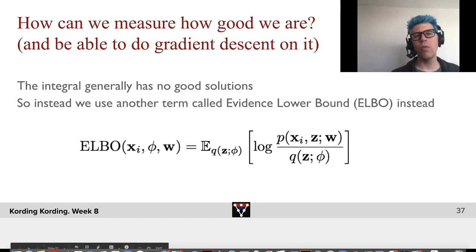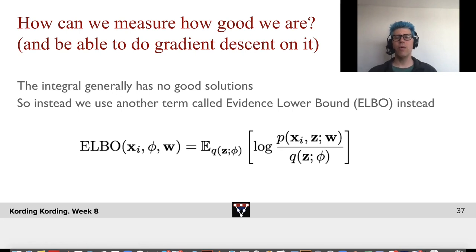So how can we measure how good they are? We need something that we can do gradient descent on. The integral generally has no good solutions. It's very hard to solve it. In most cases, we can't. So instead, we use another term called evidence lower bound, ELBO. That ELBO can be shown to be a lower bound to the thing that we would ideally want to optimize.